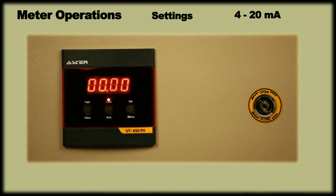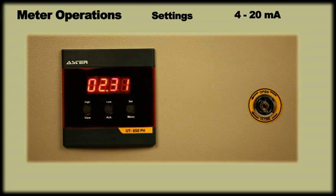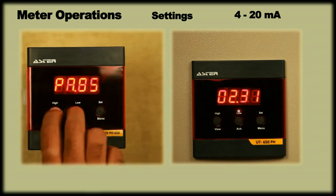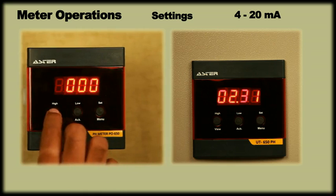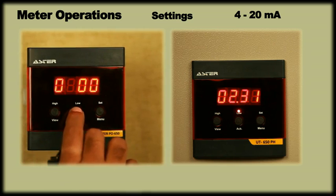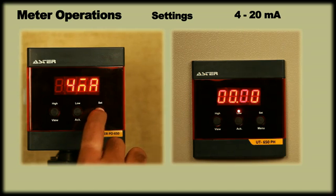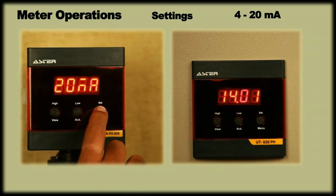Note, the meter has an inbuilt 4 to 20 mA output simulator for easy synchronization with the PLC or any other remote device. To output standard 4 and 20 mA, enter password 0420. Press menu twice to output 4 mA. Press ACK key and then menu key to output 20 mA and press menu twice to exit.